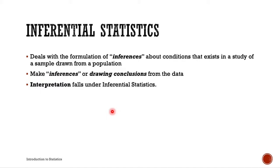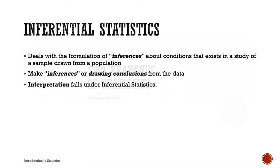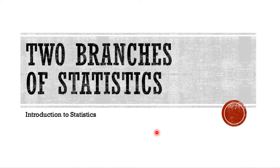And that's it for this video about the two branches of statistics. We've also talked about the definition of what statistics is. Remember those five letters — COPAI: collection, organization, presentation, analysis, and interpretation of numerical data. We have two branches of statistics: descriptive and inferential. That's it for this video. Thank you very much for watching, and I hope to see you soon. Bye.